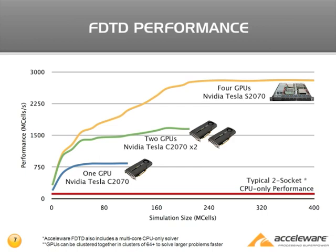This slide shows the performance we're currently seeing on NVIDIA's latest hardware — the Fermi architecture released by NVIDIA in the fall of 2009, with availability in early 2010. The performance curve shows an FDTD simulation with a CPML boundary attached. Simulation size is shown along the x-axis, and the performance metric — measured in mega-cells per second, or throughput — is on the y-axis.